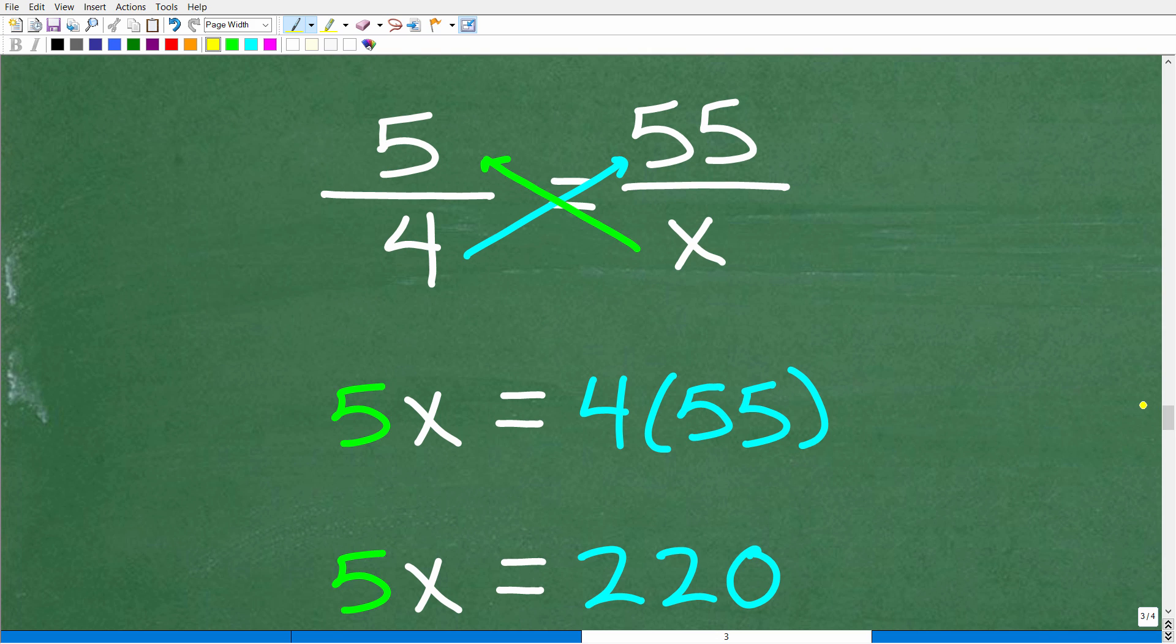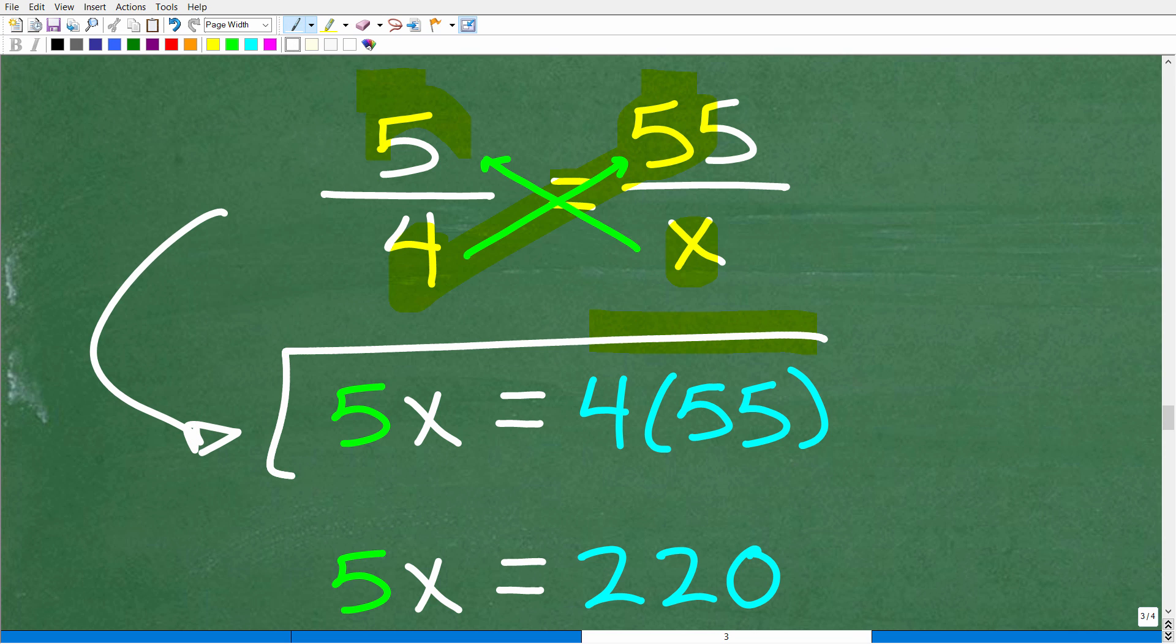And now let's go ahead and finish up this problem because really there's not much to do. So what we're going to apply is the cross product. We have a proportion. It's one fraction equal to another fraction. So we can use the cross product. So 4 times 55, we're going to multiply this way. We're going to write that right here. So 4 times 55 is equal to X times 5. All right. So this again is an application of the cross product. Now we're going to solve this simple equation.